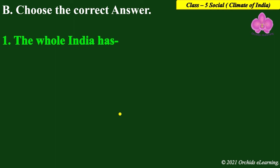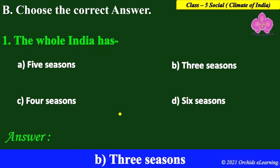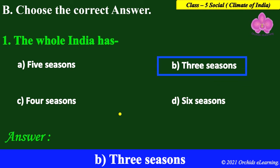Next question — choose the correct answer. First: the whole of India has how many seasons? Look at the options: five seasons, three seasons, four seasons, six seasons. The answer is B — three seasons.